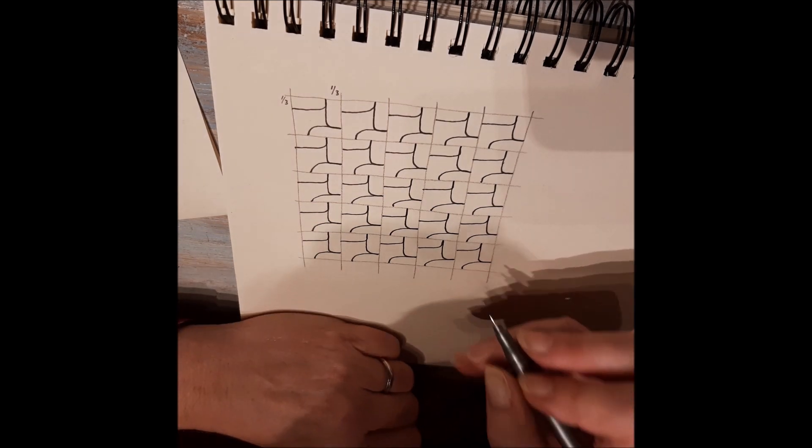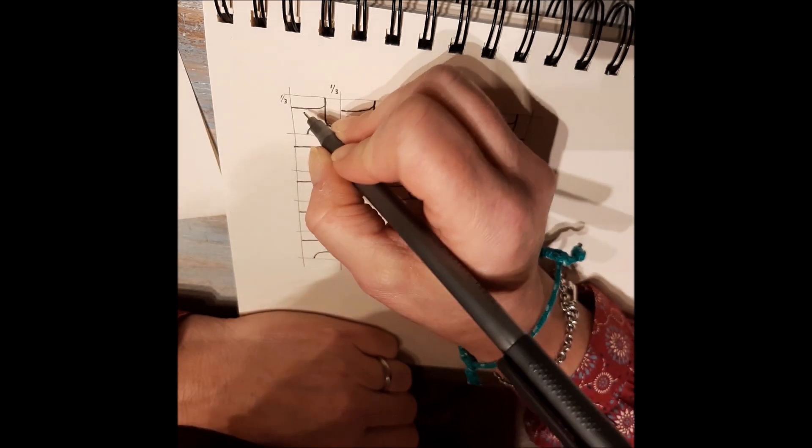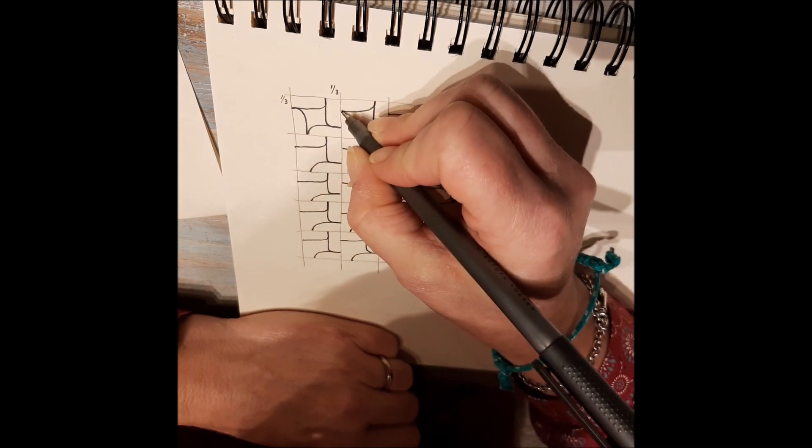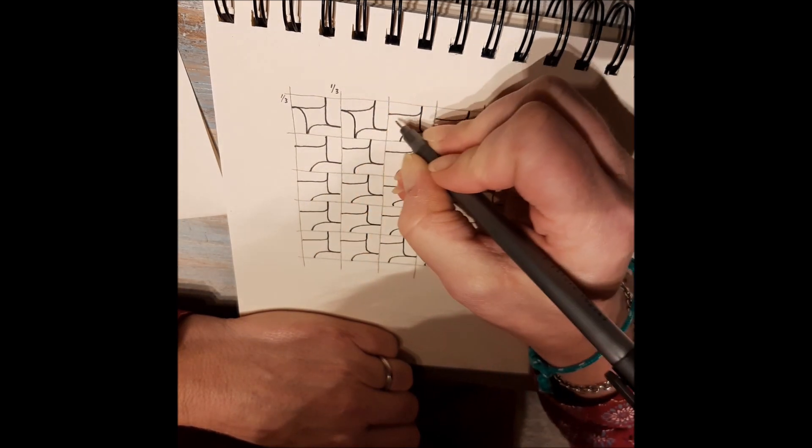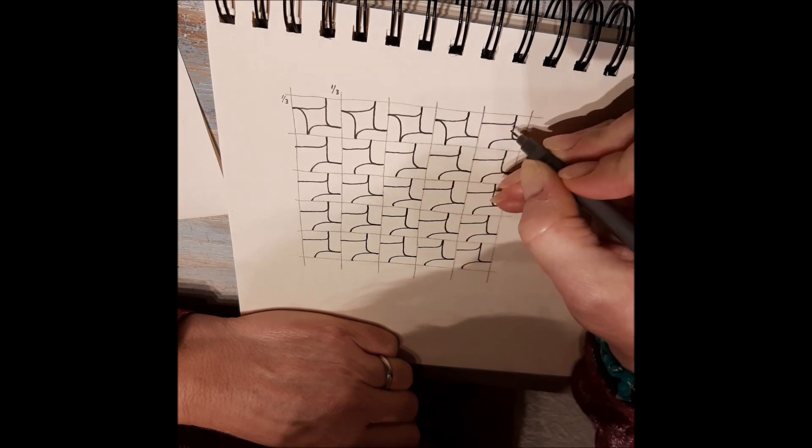And the final one is: draw a curved line one-third and end one-third. This one isn't hard because the lines are already there, so just connect these two.